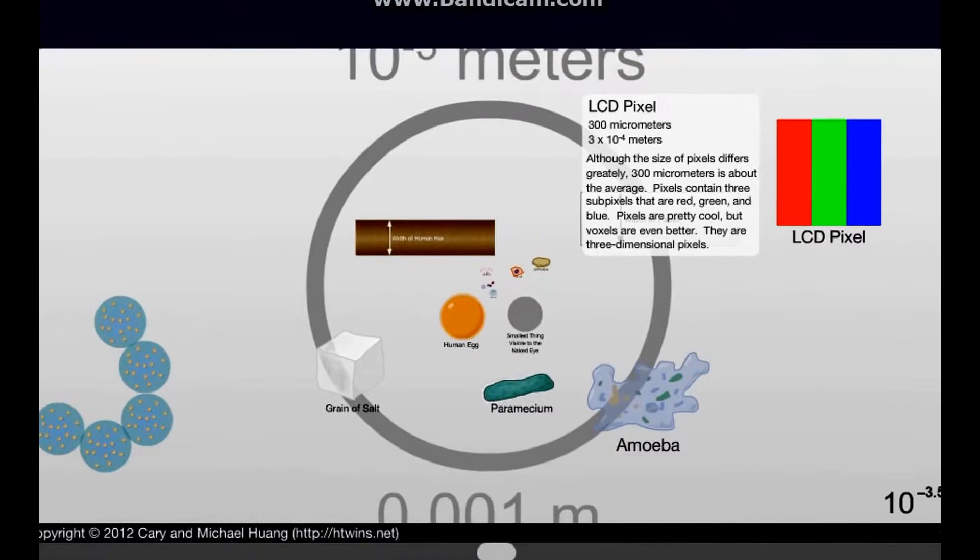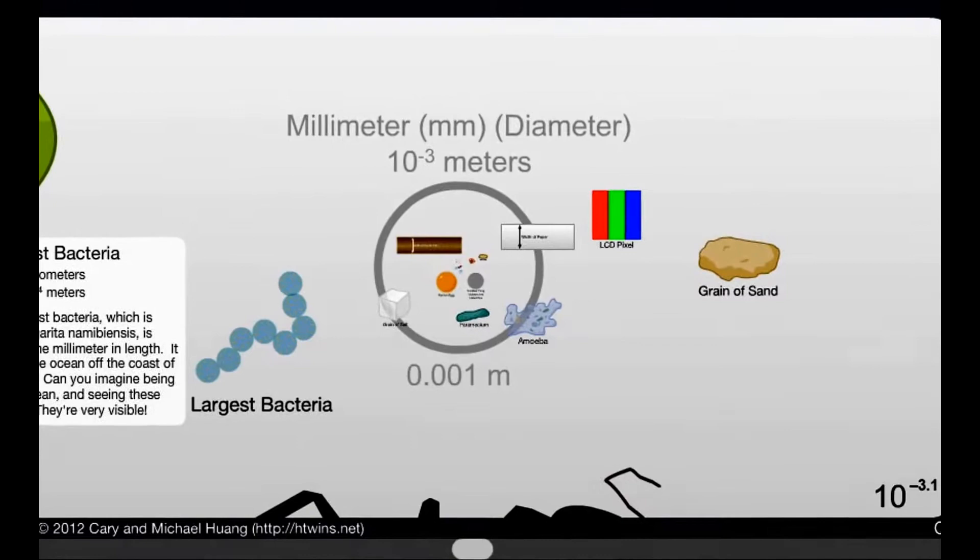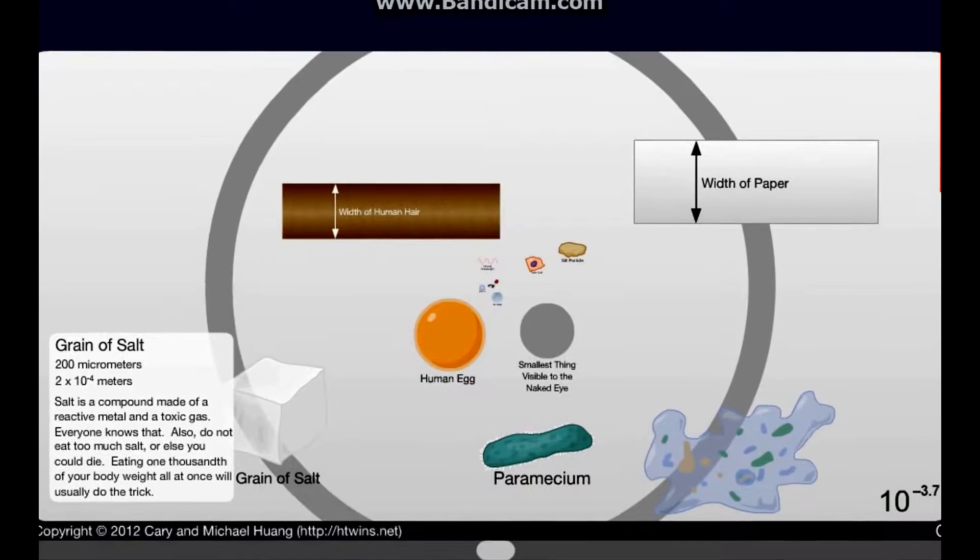LCD pixel. Now this I knew. 300 micrometers. Yeah, that's about right. The biggest bacteria is bigger than an LCD pixel? Dude, that is creepy. That means you can see it with your naked eye. That's not cool. What's this? Grain of salt. That you can see. Yeah.